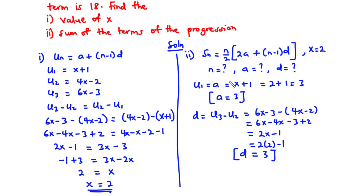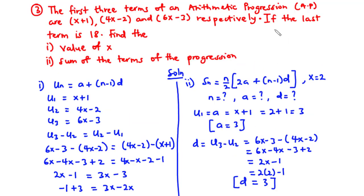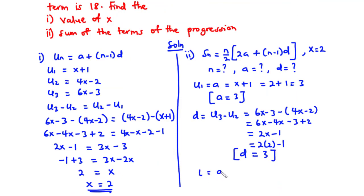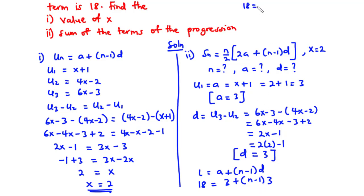Now let's find n. The last term of the AP is given as A plus (n minus 1) times D. We have the last term as 18, A equals 3, and D equals 3. So 18 equals 3 plus (n minus 1) times 3, which gives 18 equals 3 plus 3n minus 3. The 3 and negative 3 cancel, leaving 3n equals 18, so n equals 6.